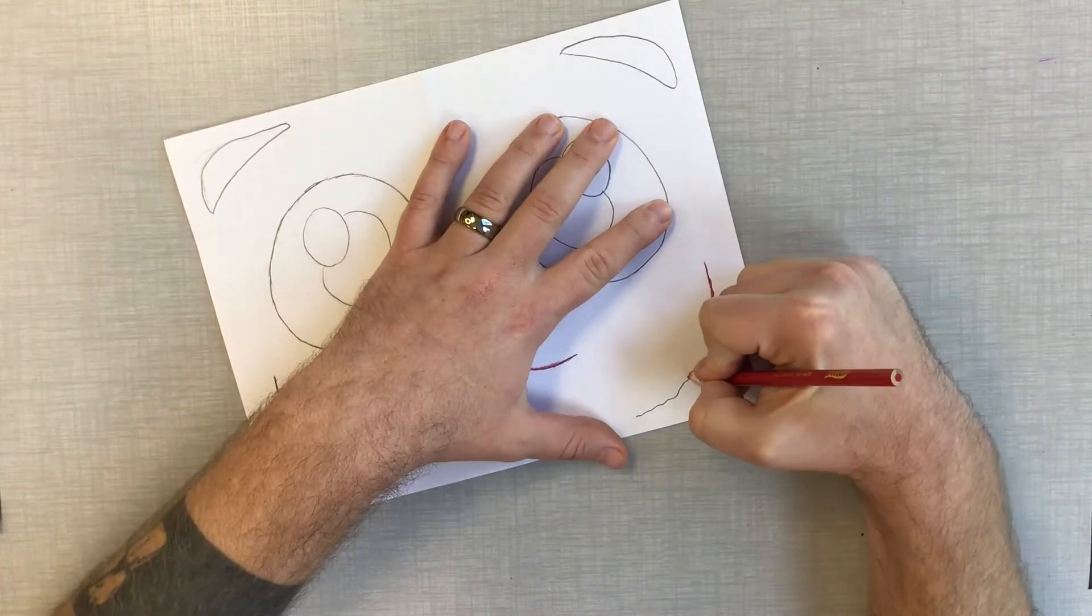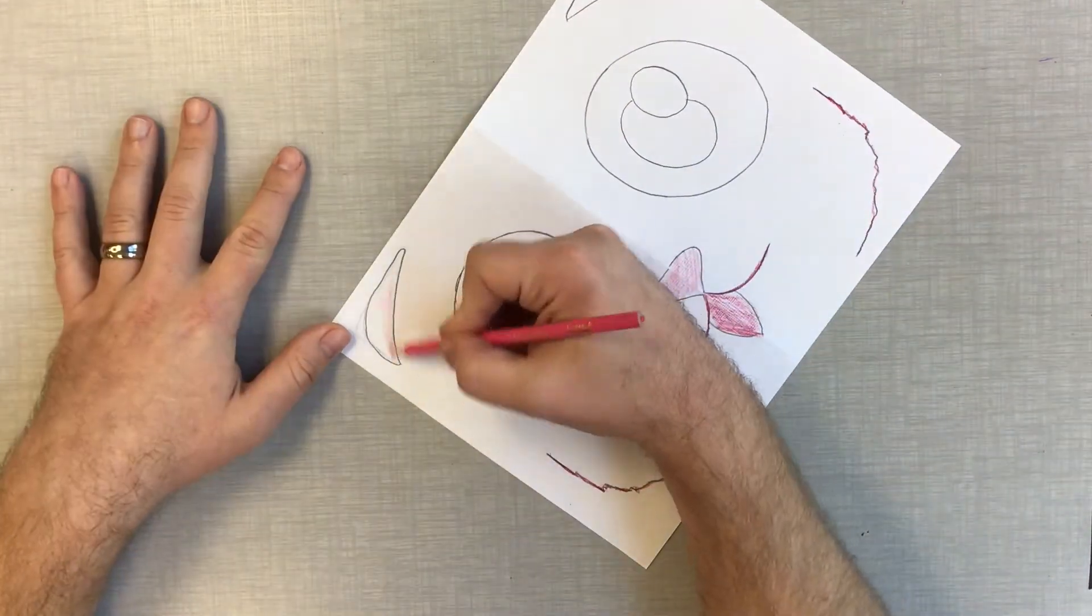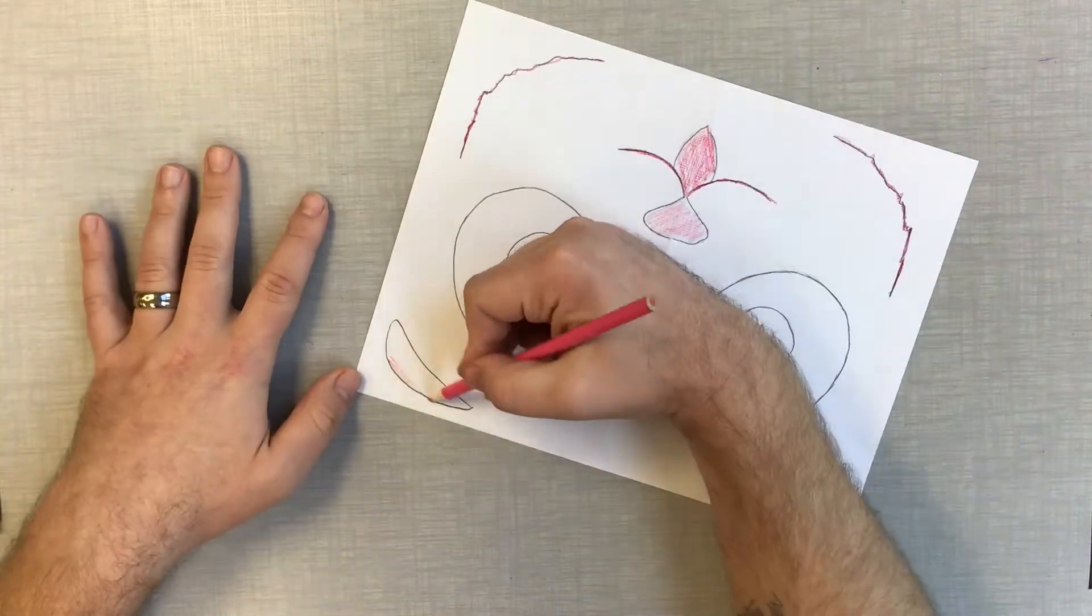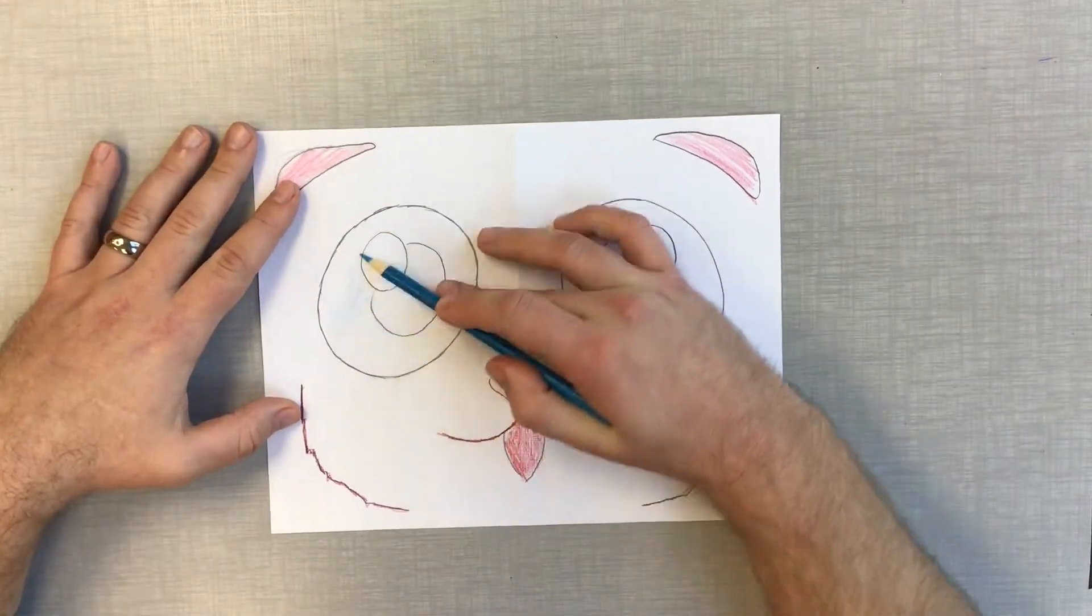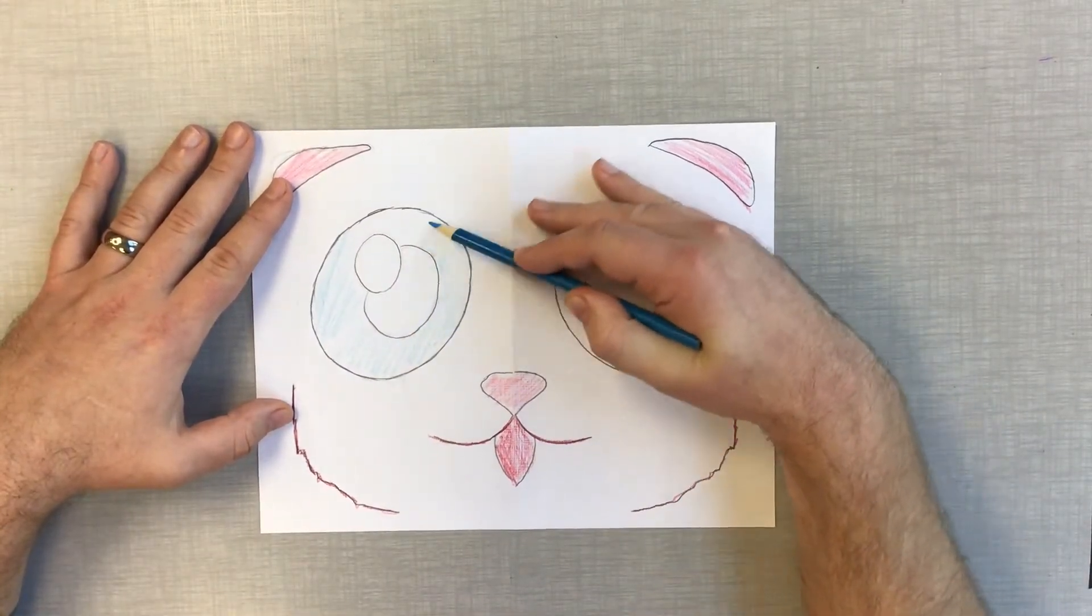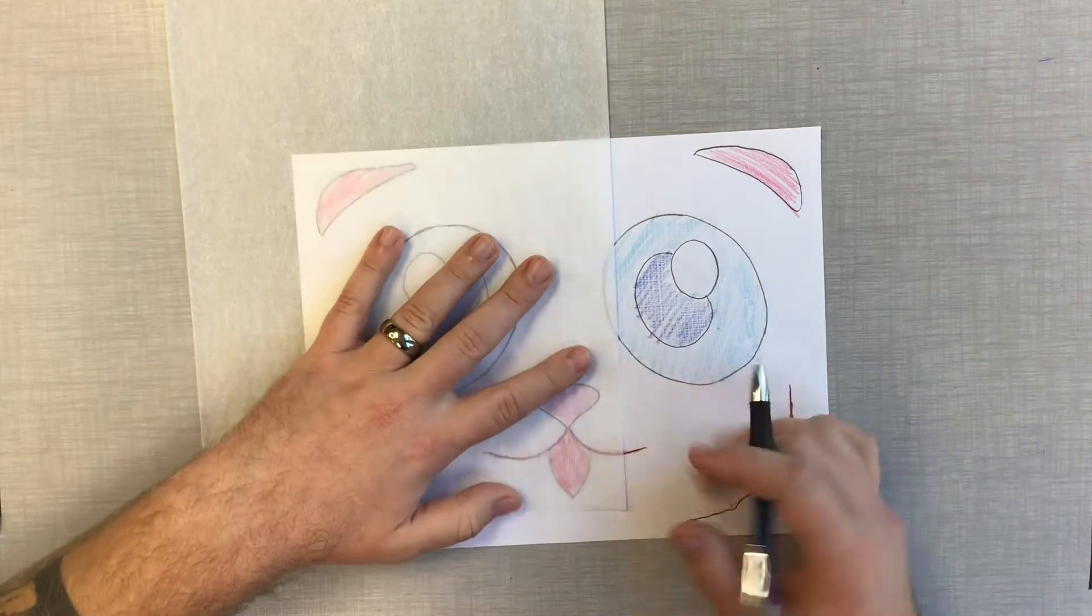What I'm doing here is I'm coloring in very simply. It doesn't have to be perfect because you're not going to have anything as strong as the felt is anyway. So just color it in so you know where all your colors are going to be.